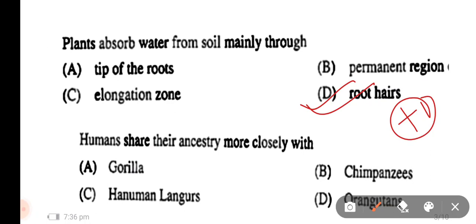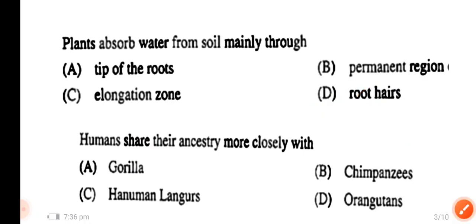Question number 4: humans share their ancestry more closely with — the options are gorilla, chimpanzee, human language reference, and orangutan. Humans share approximately 90% similarity with chimpanzees, so the answer is chimpanzees.